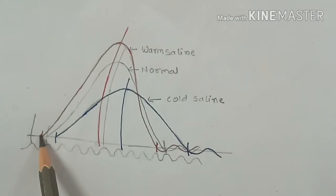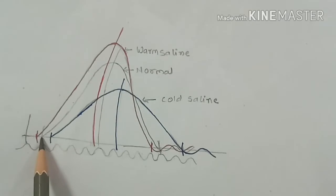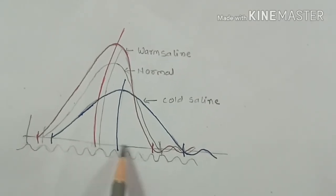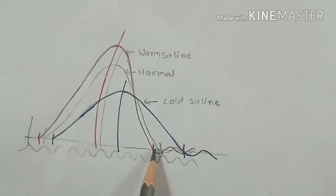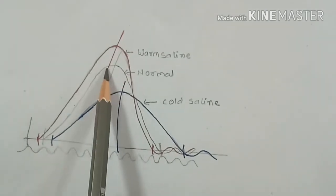When we increase temperature, all the periods of muscle contraction—latent period, contraction period, and relaxation period—are shortened, and amplitude of contraction increases.